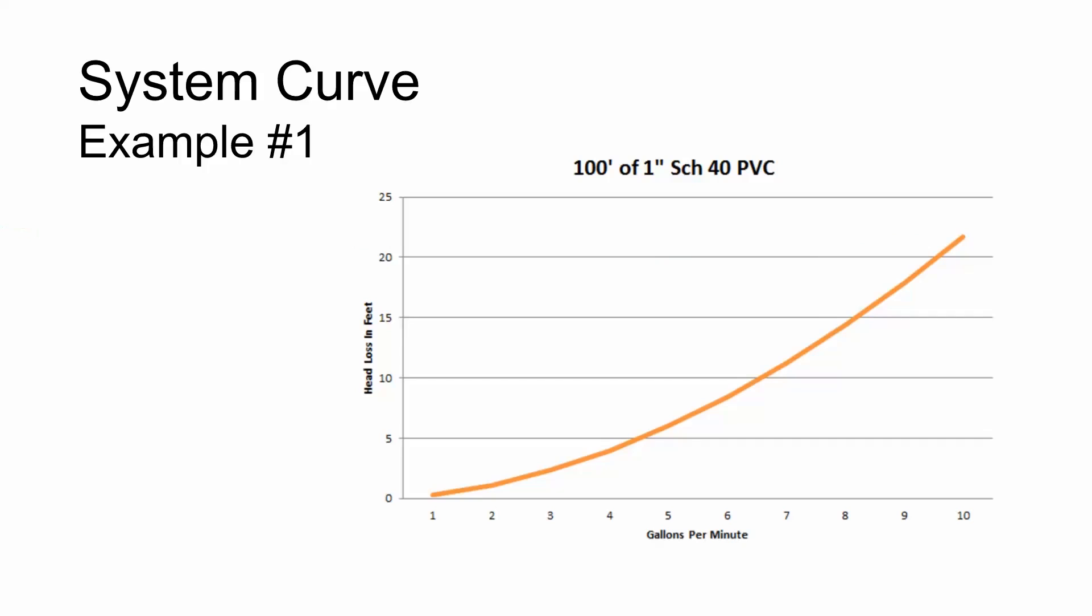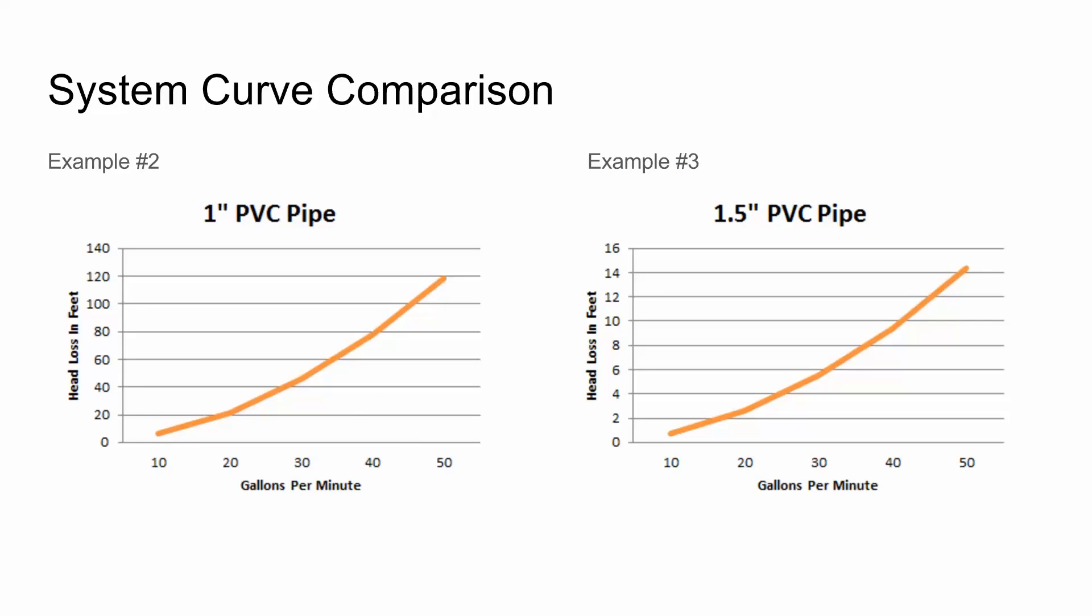In this next example, we have two different system curves again using 100 feet of PVC schedule 40 pipe. We have two different sizes: one inch and inch and a half. We can see that at about 10 gallons per minute on either curve, there's a relatively minimal amount of friction loss. For the one-inch PVC at 10 gallons per minute, you're going to have less than 10 feet of friction loss, which is less than 7 or 8 PSI roughly.